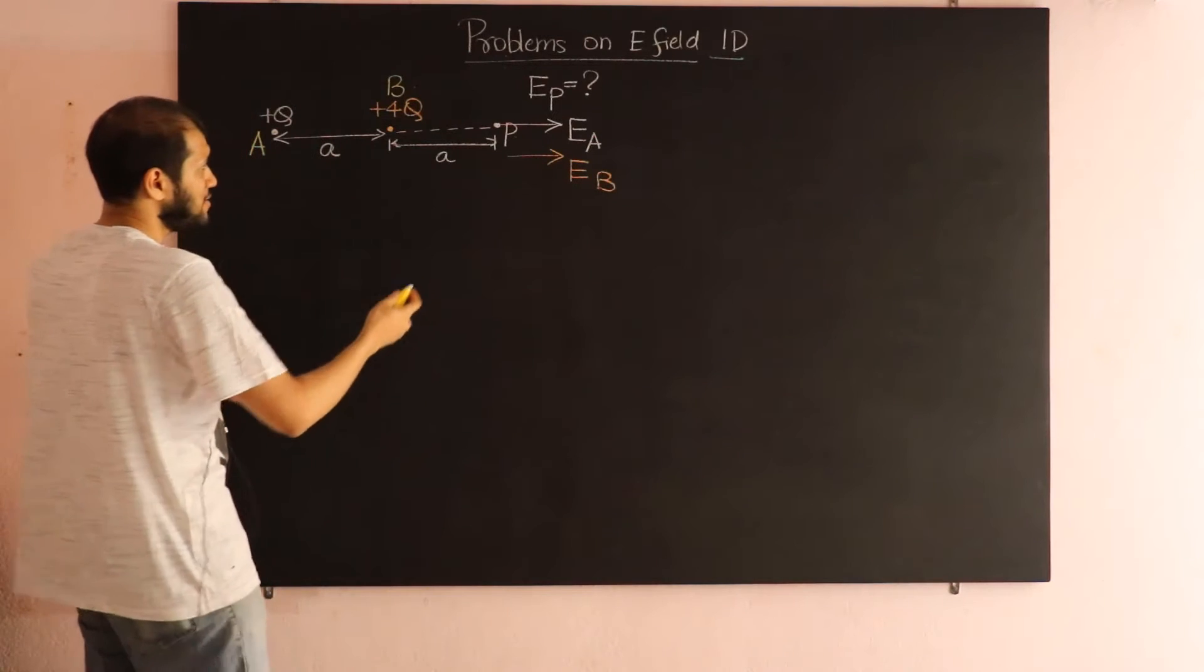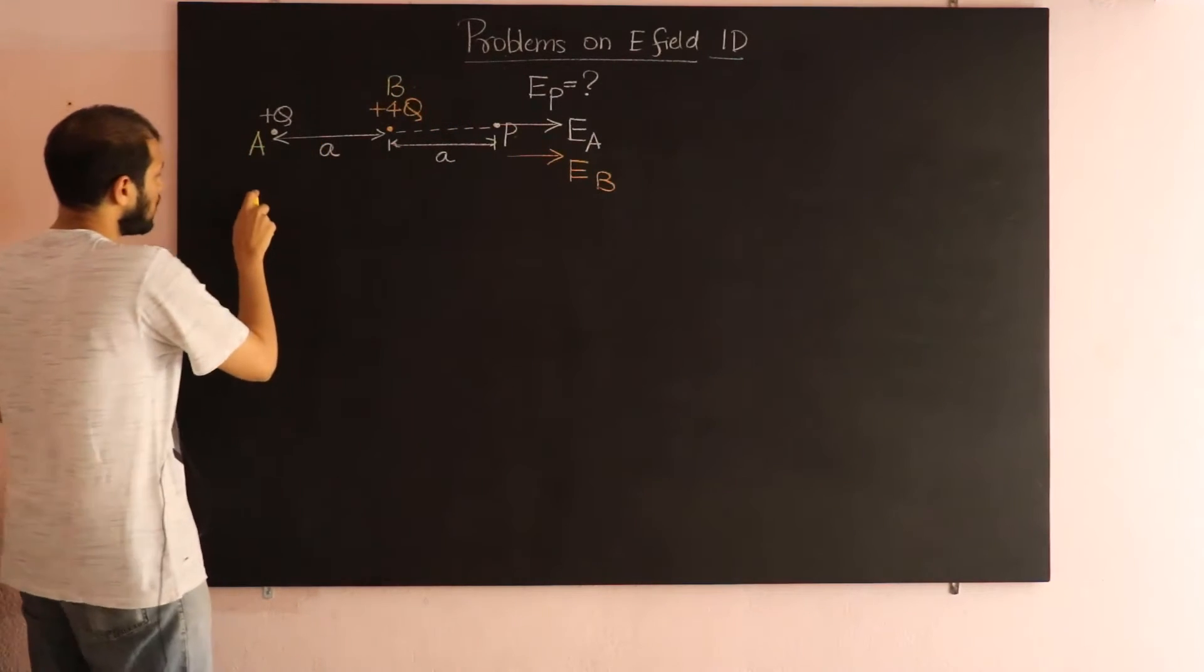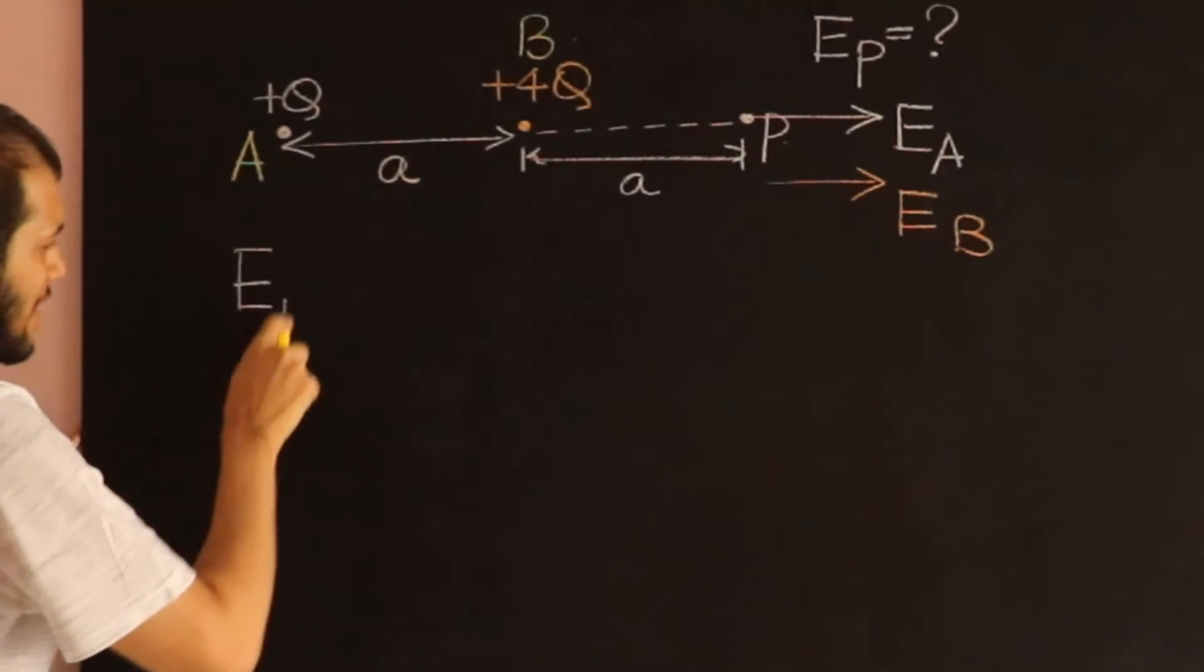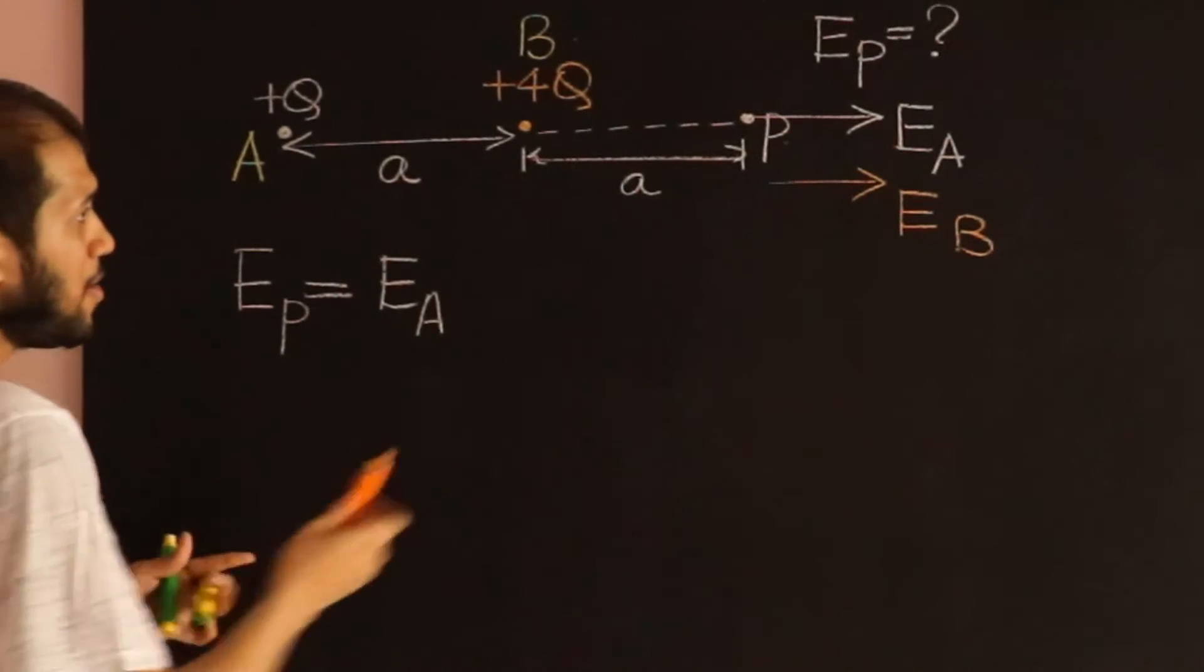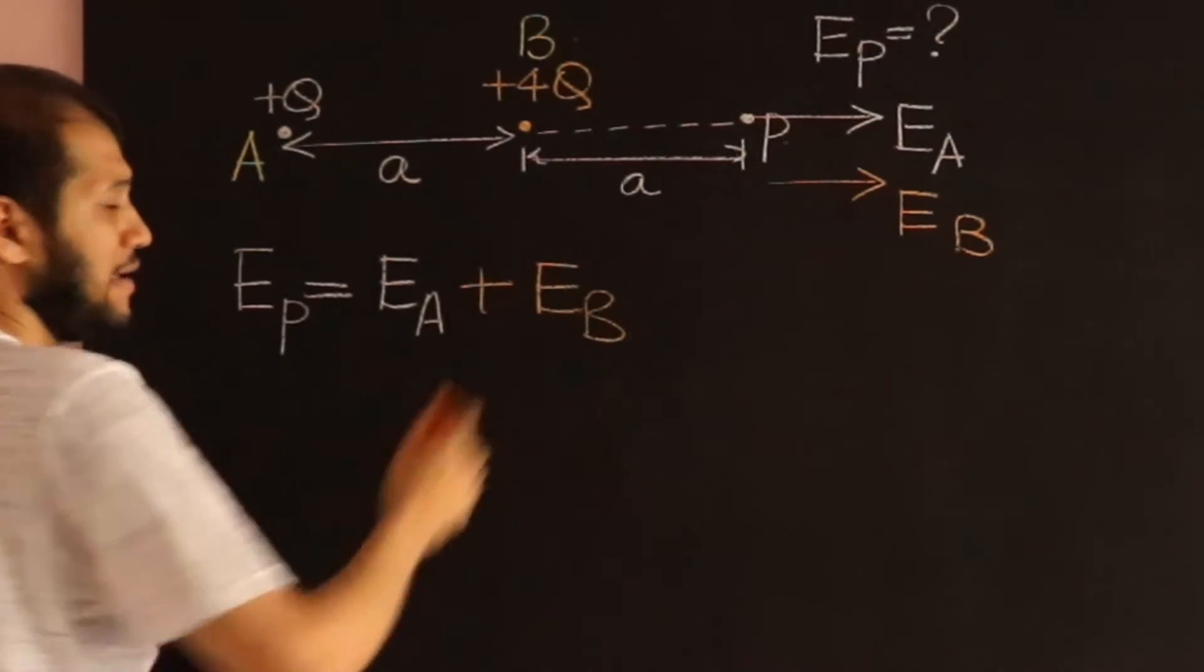The way I like to do is, I'm just going to add them over here. So the total electric field, the net field at point P, is going to be E_A plus E_B.